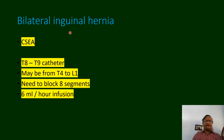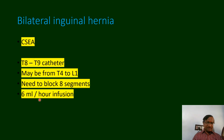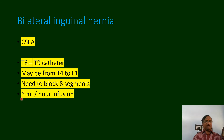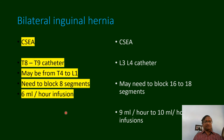For bilateral inguinal hernia repair at T8-T9, the surgical incision is around T4-L1 — approximately 7 to 8 segments. At 0.7 ml per segment, we can give a 5 to 6 ml per hour infusion. If the catheter is placed lower, you may need to increase to 9 ml per hour. The same surgery: catheter at T9 versus catheter at L4 — the required volumes differ significantly.